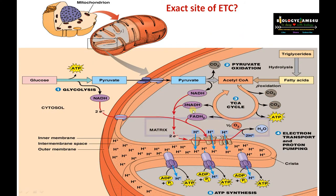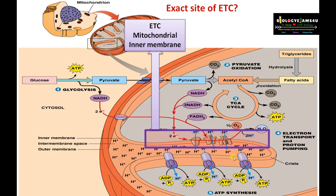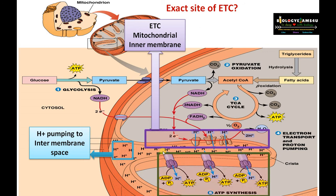This is the inner mitochondrial membrane where you can see the protein complexes. ATP synthase is also located on the inner mitochondrial membrane. Protons are pumped from the matrix side to the intermembrane space — the space between the inner membrane and outer membrane. So a gradient develops in the intermembrane space, and ATP synthesis occurs towards the matrix side of mitochondria.